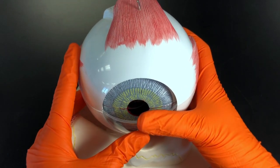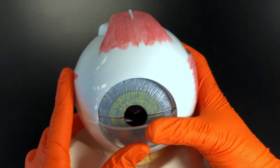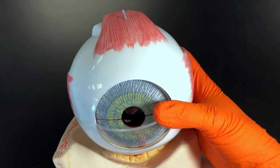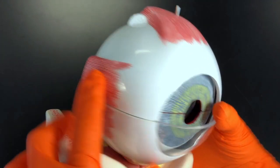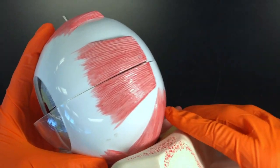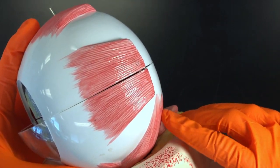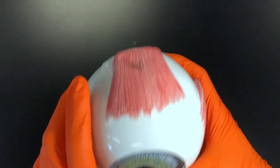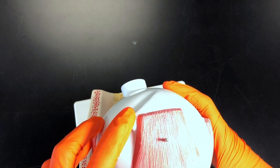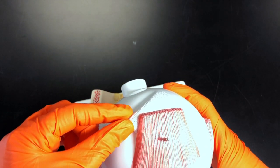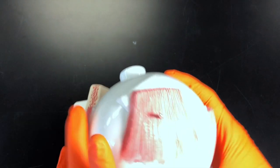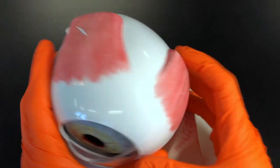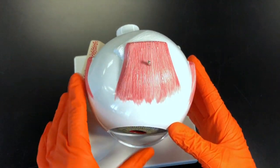These muscles are innervated by cranial nerves. The superior rectus, inferior rectus, medial rectus, and inferior oblique are all innervated by cranial nerve 3, the oculomotor nerve. The superior oblique muscle is innervated by cranial nerve 4, the trochlear nerve. The lateral rectus muscle is innervated by cranial nerve 6, the abducens nerve.